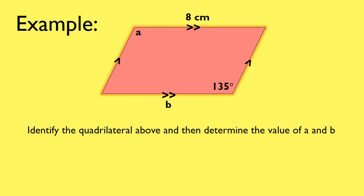Let's have a look at an example. With quadrilaterals, you can often see the answer directly from the question — the properties give you a guide. The question asks: identify the quadrilateral above and determine the value of A and B. Immediately we can see that A would be 135 and B should be 8 — so you can see it's easy.